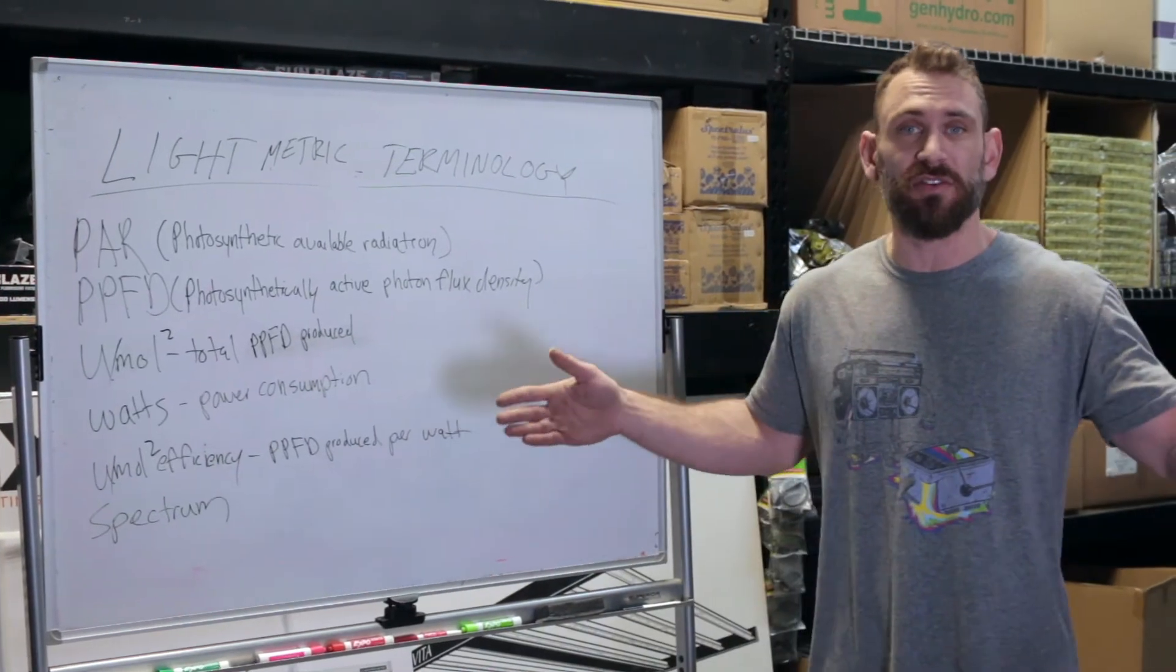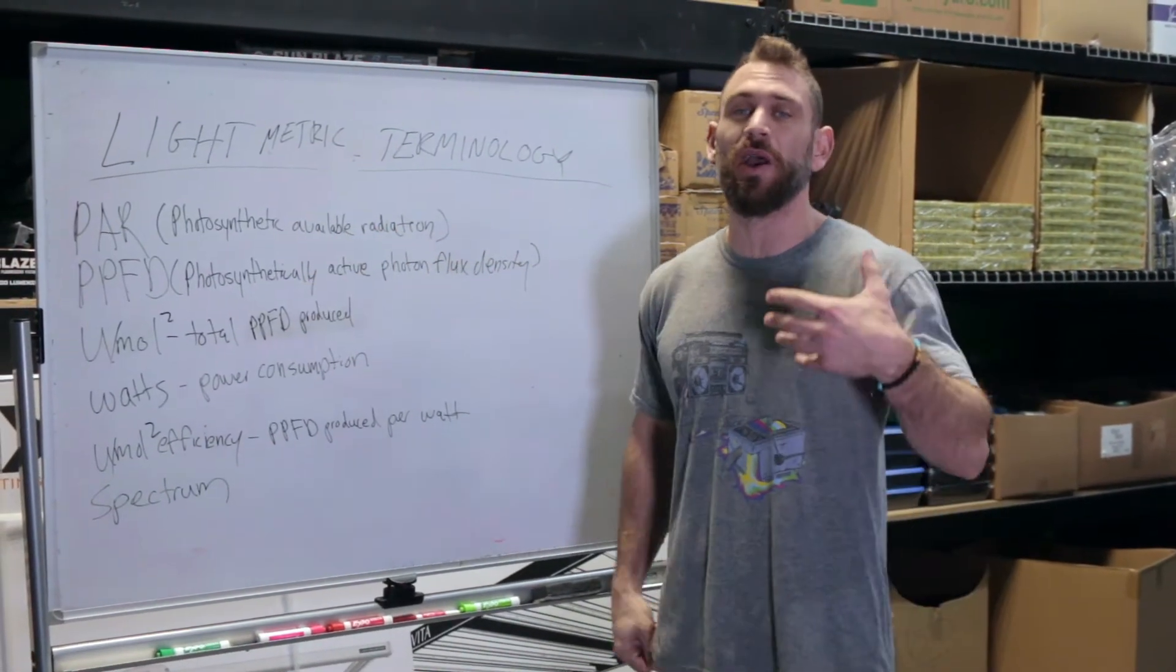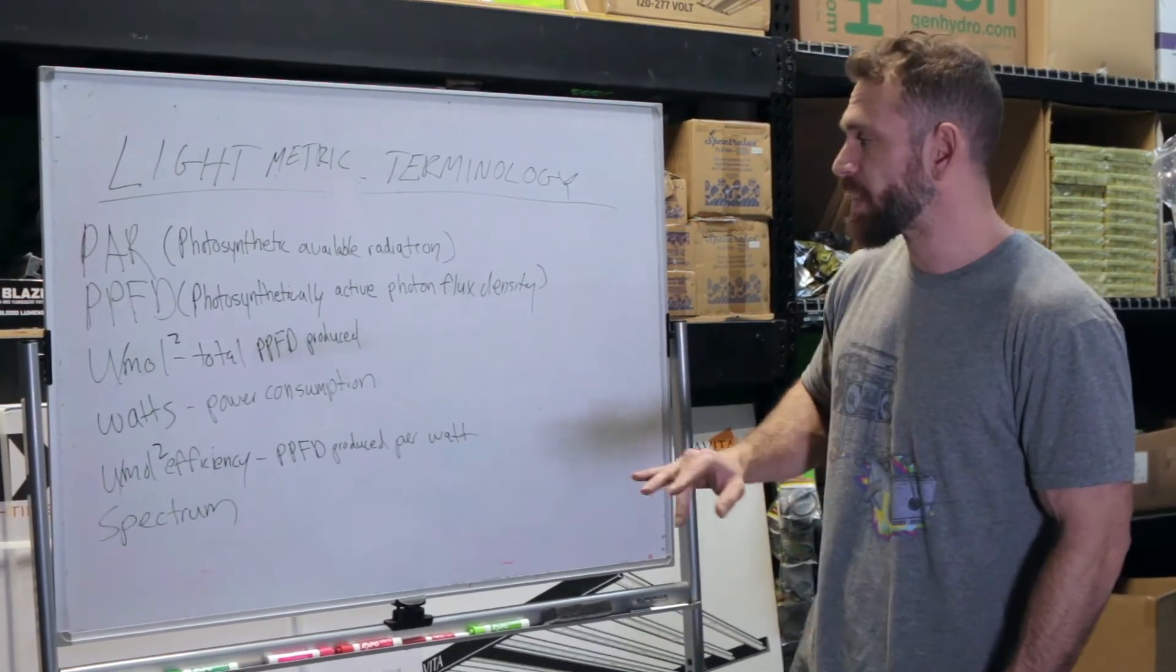So when you're looking at the box of a fixture that you're purchasing, you're going to want to look at the U-moles. This is going to tell you how much total light is produced by the light.